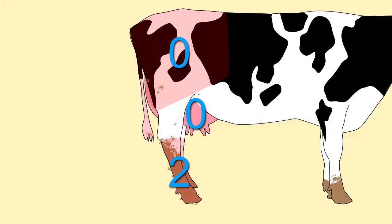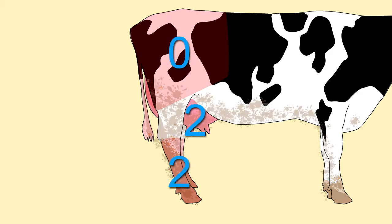If only the lower hind legs are dirty, then the problem is likely to be the cleaning of passageways or drainage where the cows are walking. If the udder and the lower part of the cows are dirty, then it is a problem with where the cows are lying.